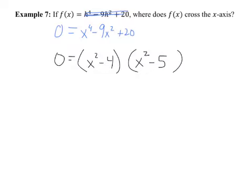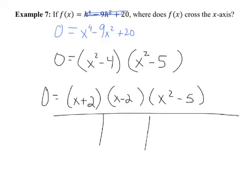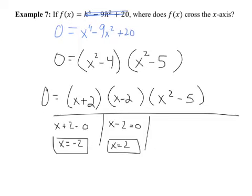You can factor further. x squared minus 4 is a difference of perfect squares: (x plus 2)(x minus 2). x squared minus 5 is not a perfect square, so it factors as (x plus radical 5)(x minus radical 5). Setting each equal to zero gives four solutions: x equals negative 2, positive 2, negative radical 5, and positive radical 5. These are the four x-intercepts. Notice the symmetry — these occur on opposite sides, because this is an even function. Radical 5 is approximately 2.2.